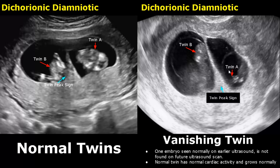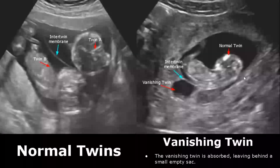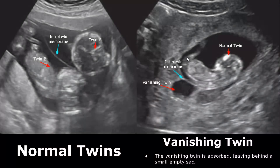Vanishing twin occurs when an embryo seen normally on an earlier ultrasound disappears on a future scan. The other twin has normal cardiac activity and grows normally. The vanishing twin will be smaller in size and will have no heartbeat. In this image we see a small, empty sac. The vanishing twin is ultimately absorbed and only one normally growing twin is left behind.